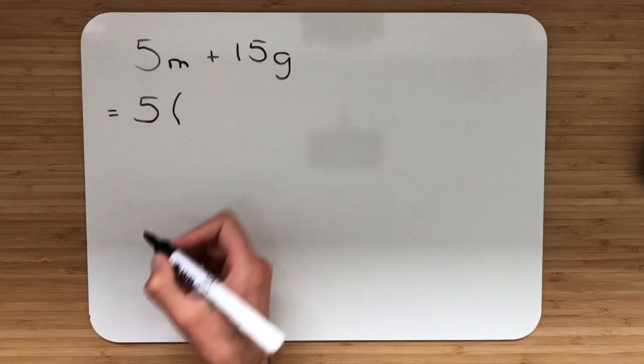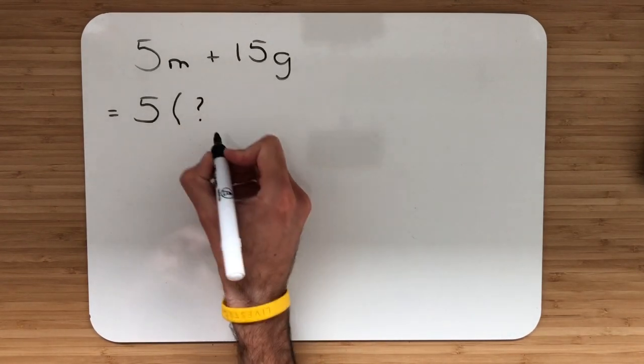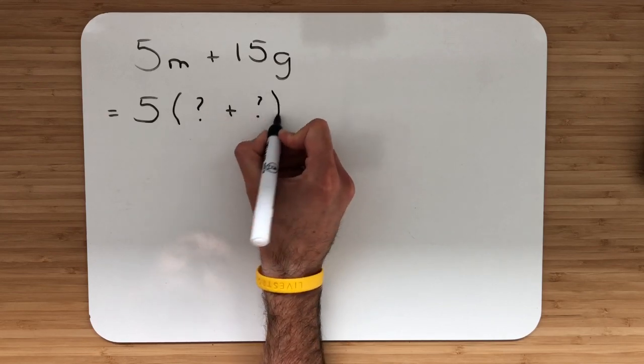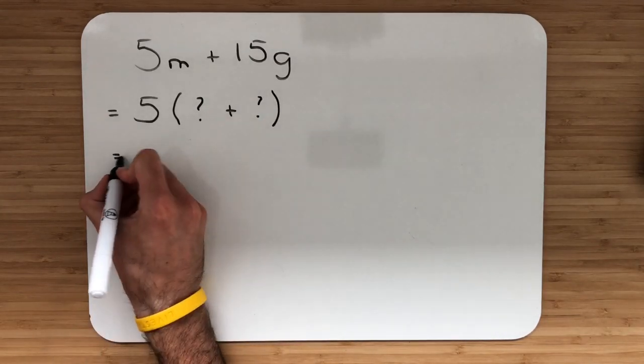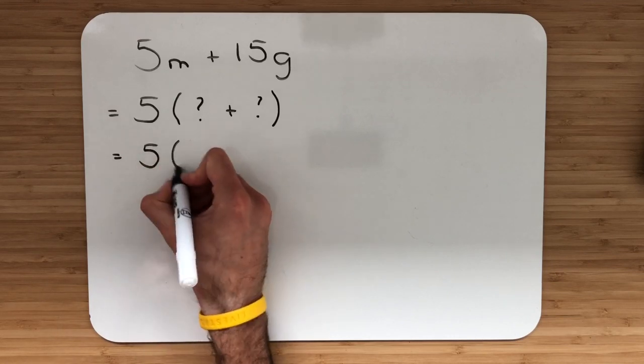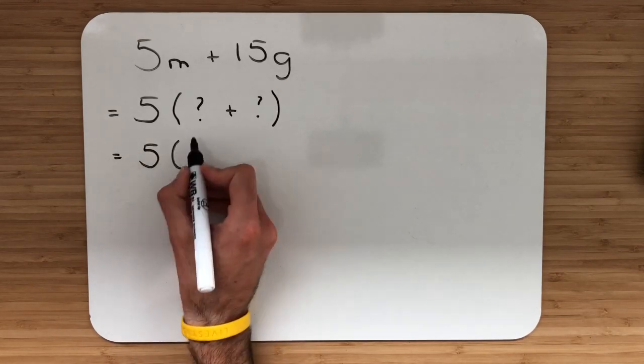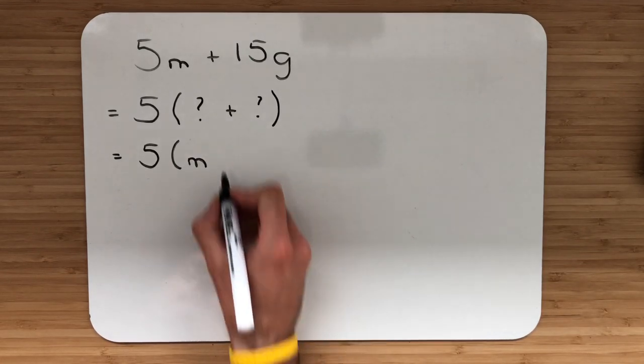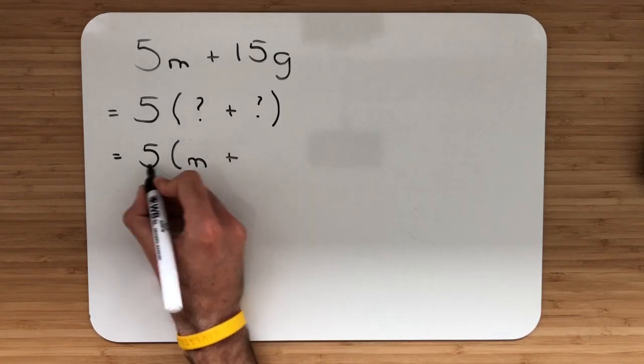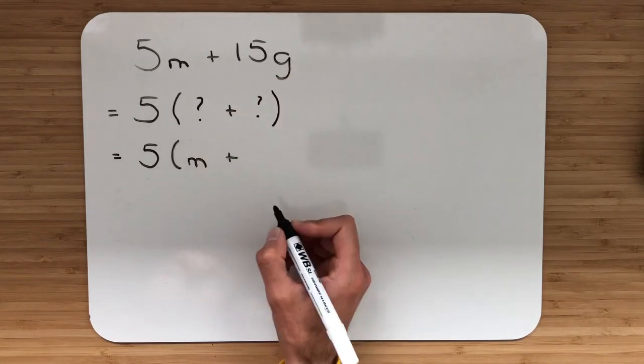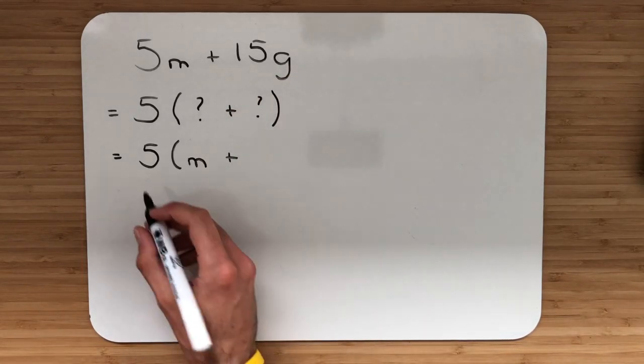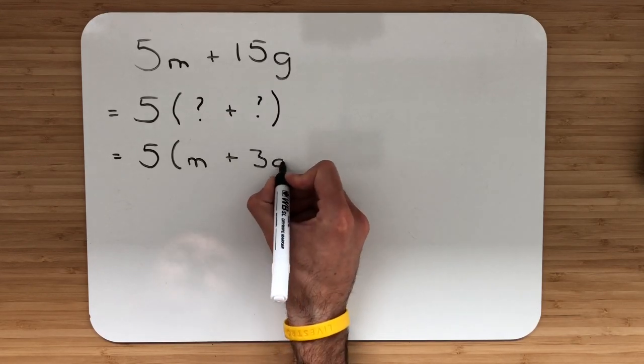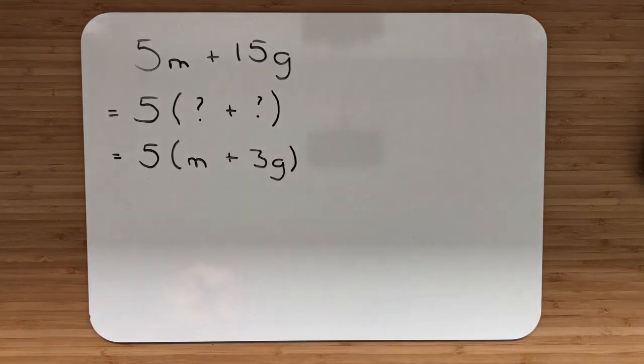So we're going to bring back our bracket. I'll put question mark, add question mark to help us out. We need to work out these question marks. So 5, bracket. 5 multiplied by what gives me 5m? That is just m. Add. 5 multiplied by what gives me 15g? Deal with the numbers first. 5 multiplied by what gives 15? That's 3. And then we add on that letter g.